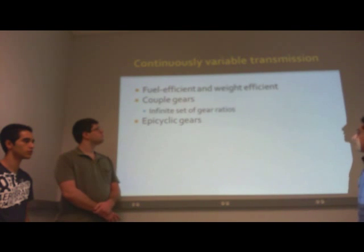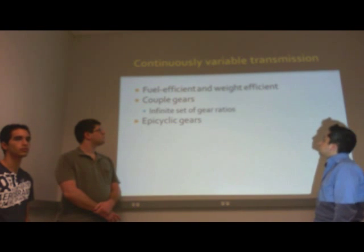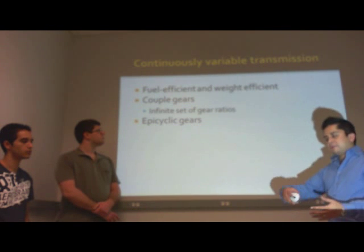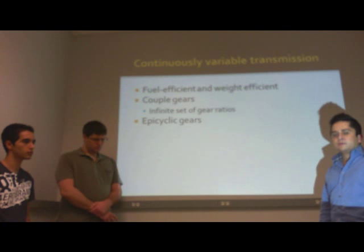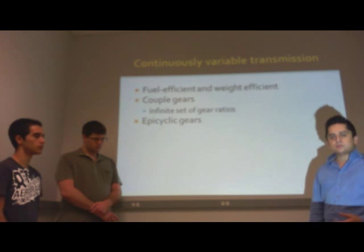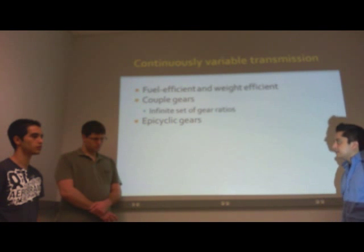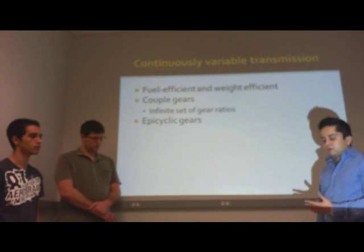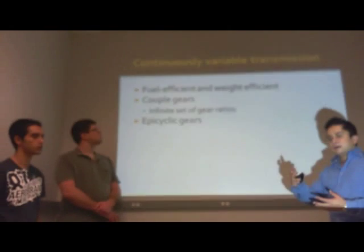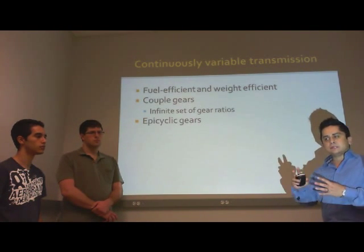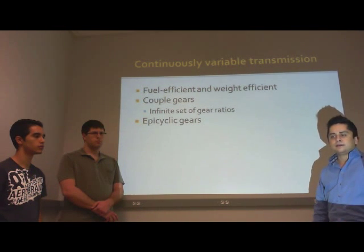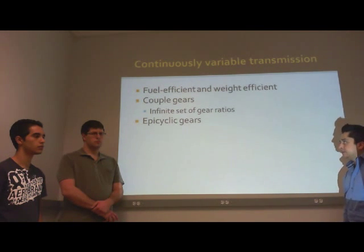The next gearbox is the continuously variable transmission, or CVT. It doesn't have as many pinions or fixed gears as previous designs; however, it can achieve an infinite number of gear ratios. It is mainly composed of epicyclic gears connected through a hydraulic pump that changes the speed inside the gearbox, allowing for unlimited speed ratios.